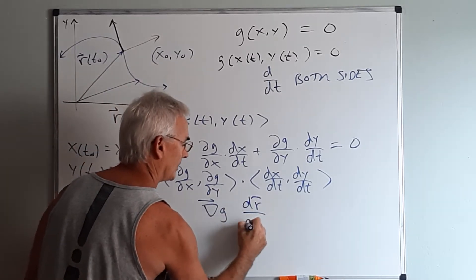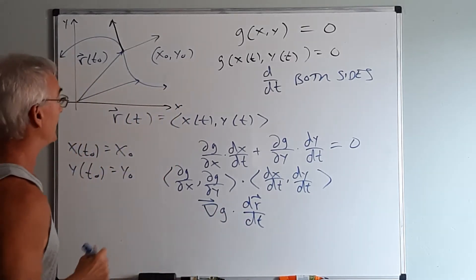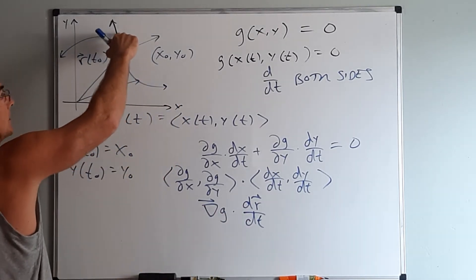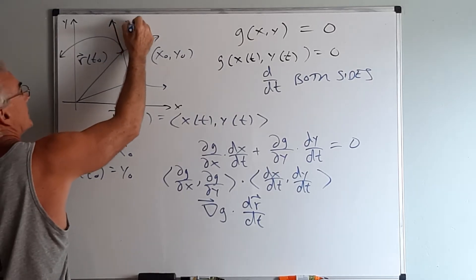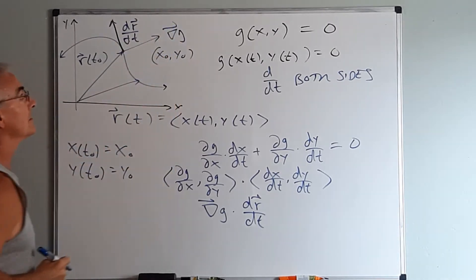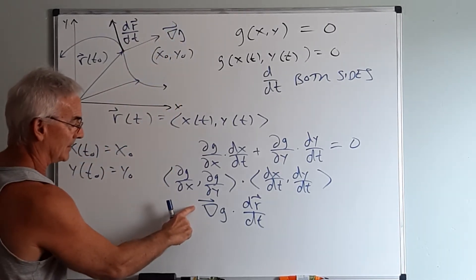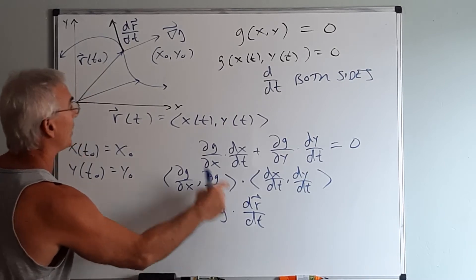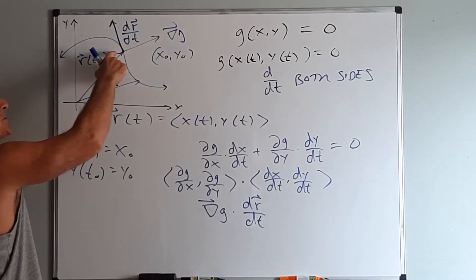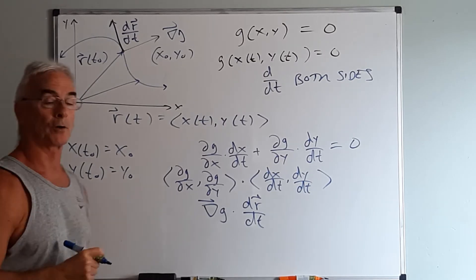dr dt or basically the velocity vector. So we've got here this is dr dt and therefore this is the gradient. And we have just proved then that the gradient is orthogonal to the velocity but the velocity is tangent to the curve. That makes the gradient orthogonal to the curve.